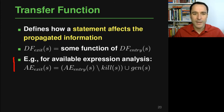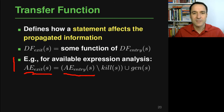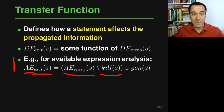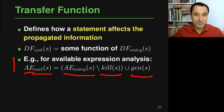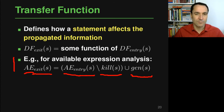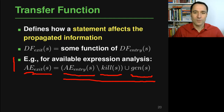For the available expressions analysis the transfer function is: ae_exit(s) = (ae_entry(s) minus kill(s)) union gen(s). We remove everything defined by the kill helper function and then add new elements from gen(s). In practice, for most data flow analyses this kill-and-generate pattern is the most natural way to define the transfer function.